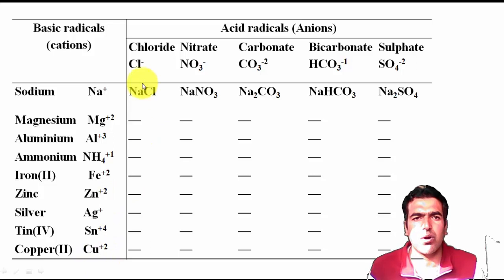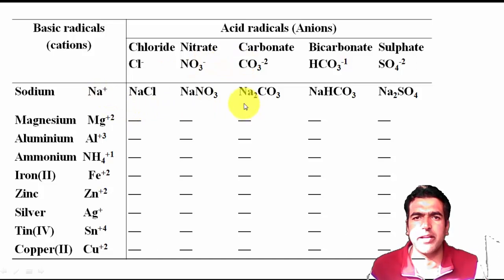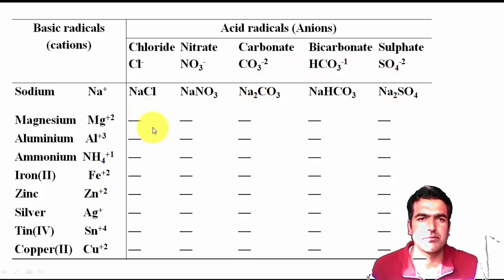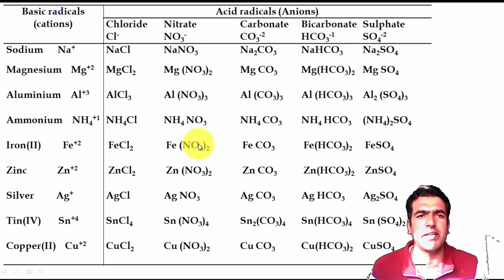A cross-multiplication table can be used: vertical columns for cations and horizontal rows for anions. For example, sodium with NO₃⁻ gives sodium nitrate; sodium with CO₃²⁻ gives sodium carbonate, with formula Na₂CO₃; sodium with SO₄²⁻ gives sodium sulfate. Students should practice writing formulas and then cross-check with the provided solutions.